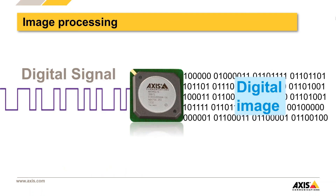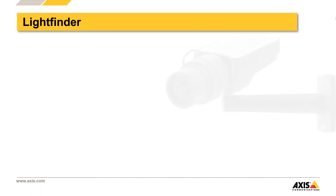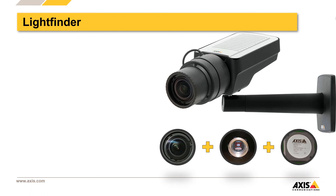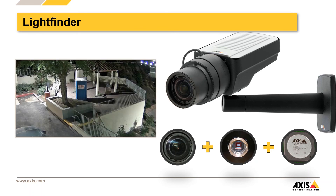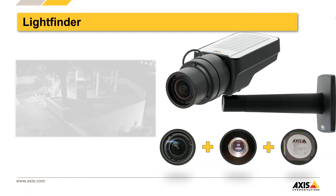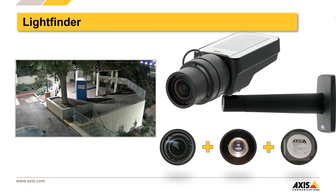With these image improvements come different technologies. One is called LightFinder. It's actually a combination of improved lenses, improved image sensors, and an improved computer chip inside the camera. Here's a scene starting nice and dark — you're going to see it start to get brighter as LightFinder is turned on, because LightFinder allows you to see color in extremely low light. When I say low light, I mean so dark that you and I can hardly see anything, and it can still give you a color image.